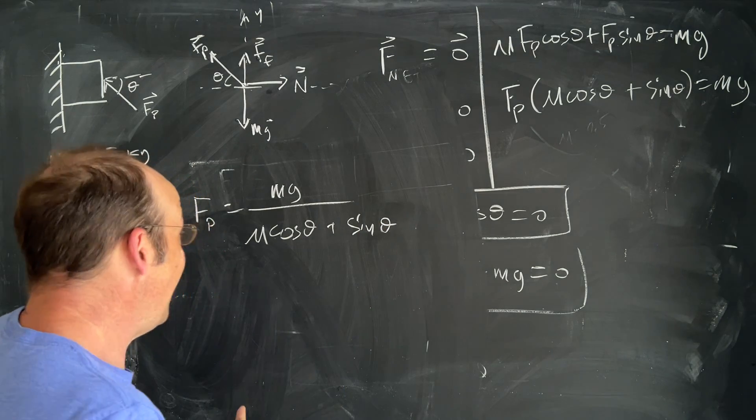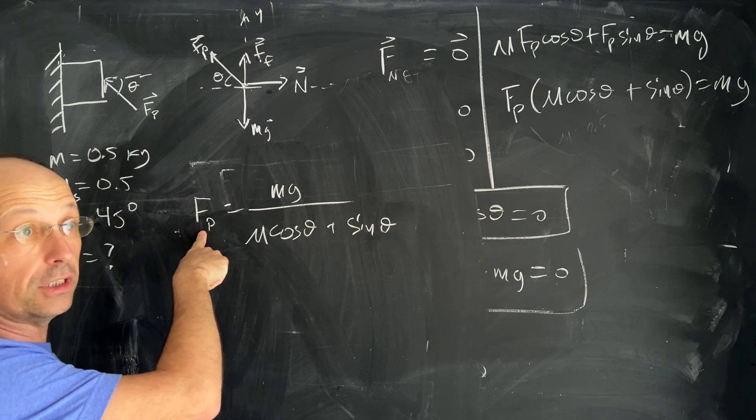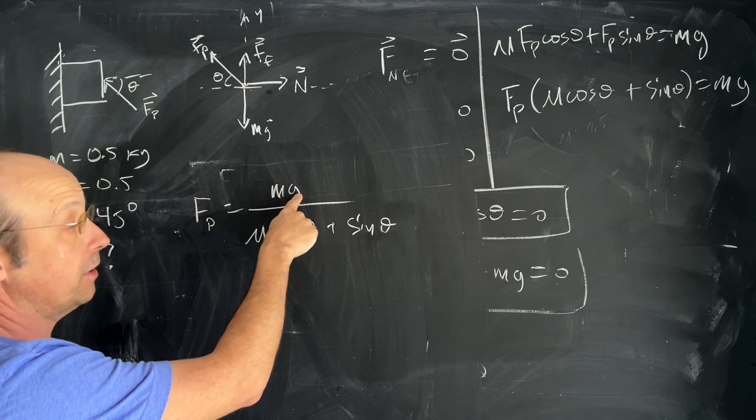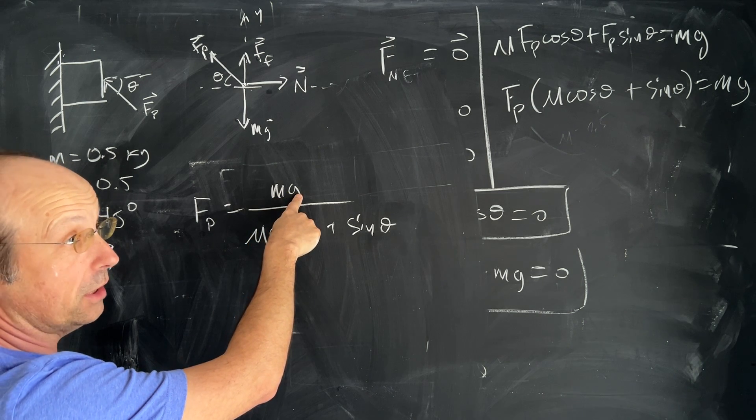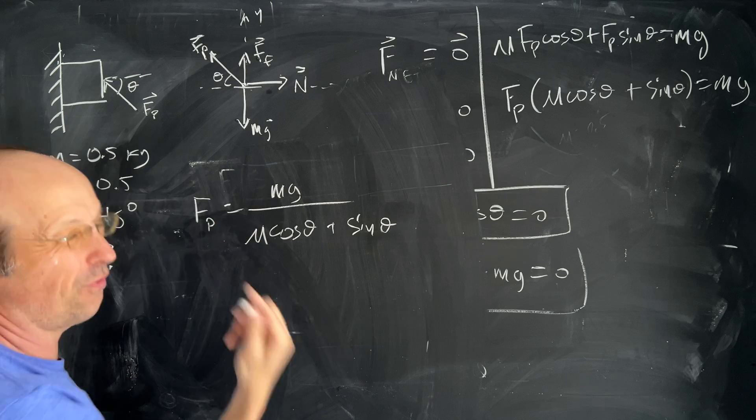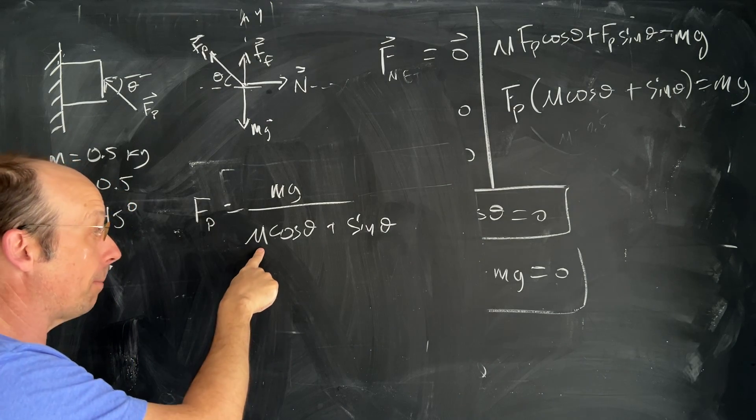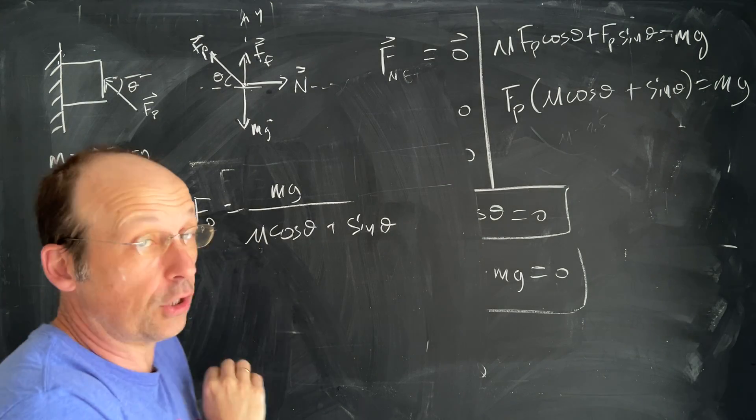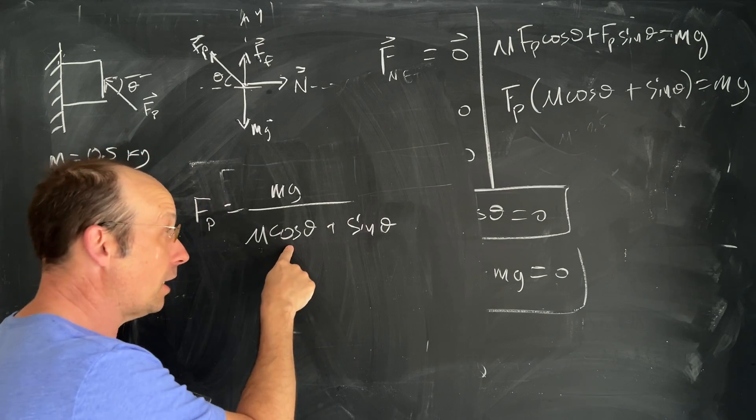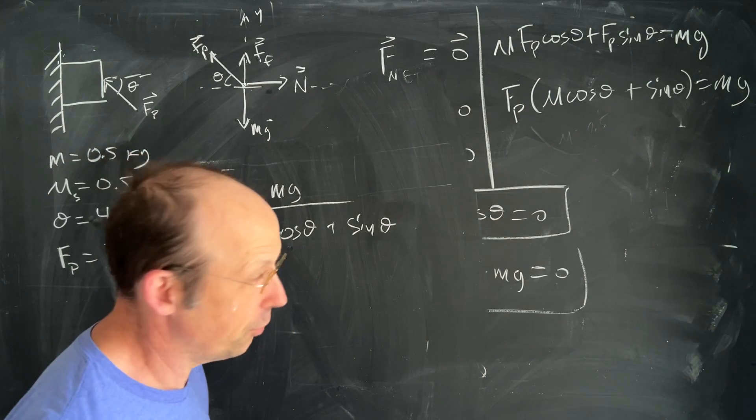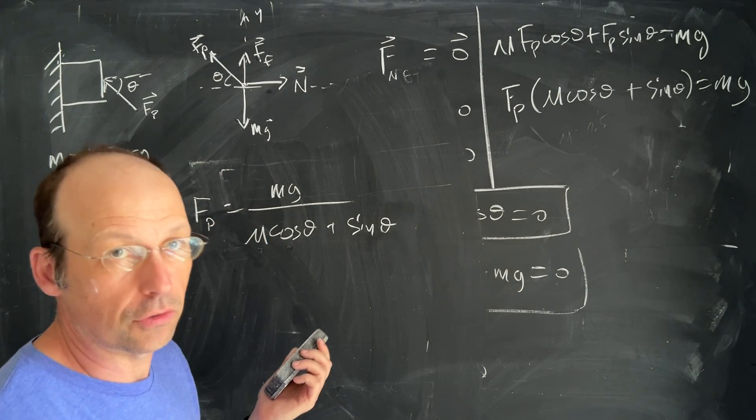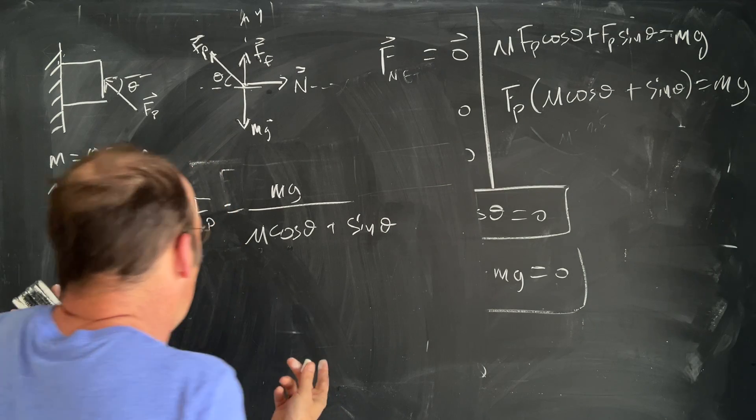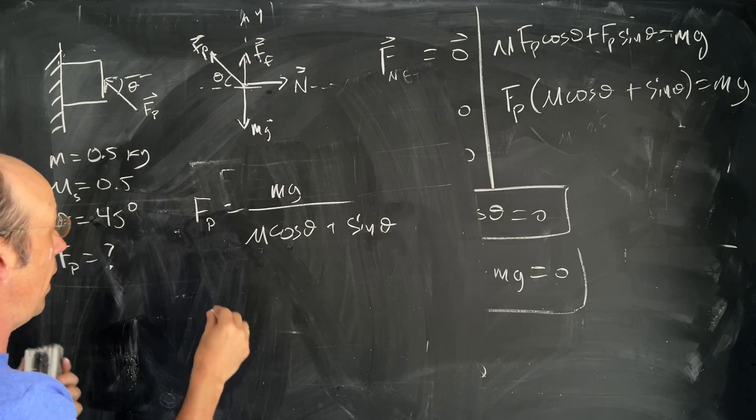Okay now we can kind of check this right. I know this has to have units of newtons so this has units of kilograms times newtons per kilogram which is newtons so that's force. This coefficient μ is just a coefficient has no units, cosine is a ratio so it has no units, sine is a ratio it has no units. Okay but we're done.